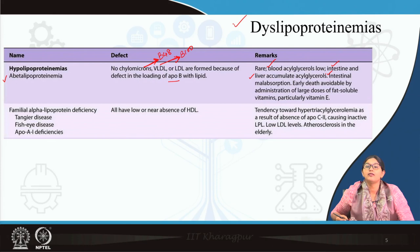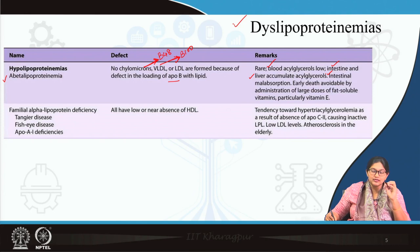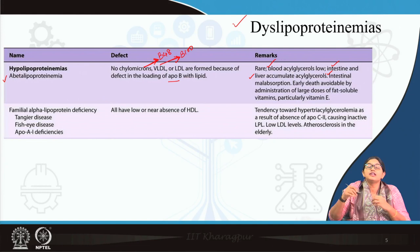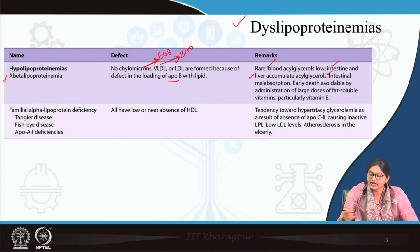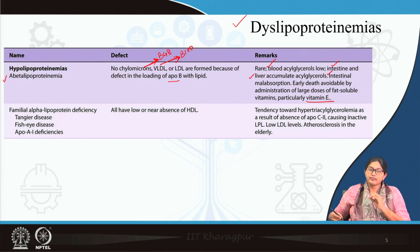Those triacylglycerols cannot enter the circulation, so they accumulate inside the intestine and liver, causing intestinal malabsorption. Dietary lipids are also important for transport of fat-soluble vitamins A, D, E, and K, so there will be severe fat-soluble vitamin deficiencies. Early death can be avoided by administration of those fat-soluble vitamins in large doses — particularly vitamin E is very important in this regard.